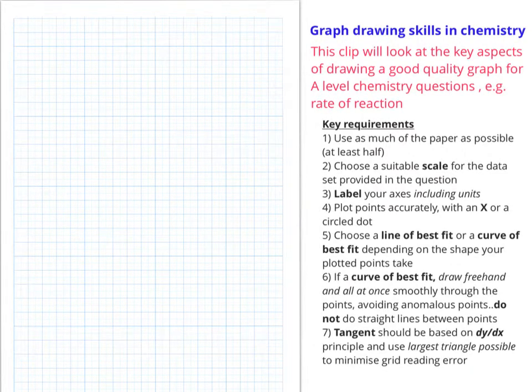The key requirements are listed as follows. You need to use as much of the paper as possible and choose a suitable scale for the data set you're given. You label your axes, including units, and you plot the points accurately with an X or a circle dot.